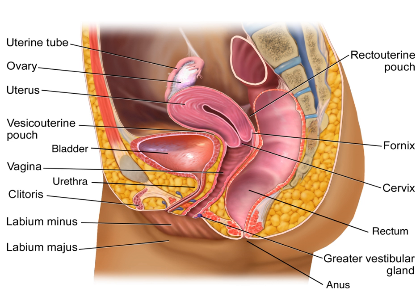Animal reproduction occurs by two modes of action, including both sexual and asexual reproduction. In asexual reproduction, the generation of new organisms does not require the fusion of sperm with an egg. However, in sexual reproduction, new organisms are formed by the fusion of haploid sperm and eggs, resulting in what is known as the zygote. Although animals exhibit both sexual and asexual reproduction, the vast majority of animals reproduce by sexual reproduction.